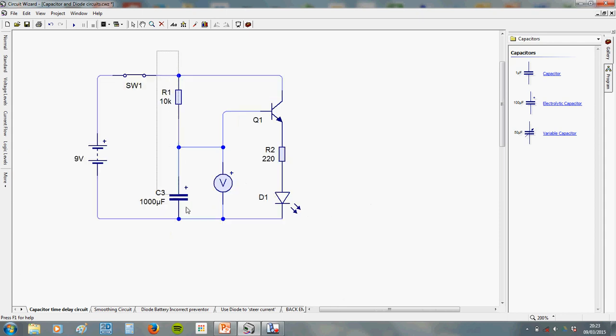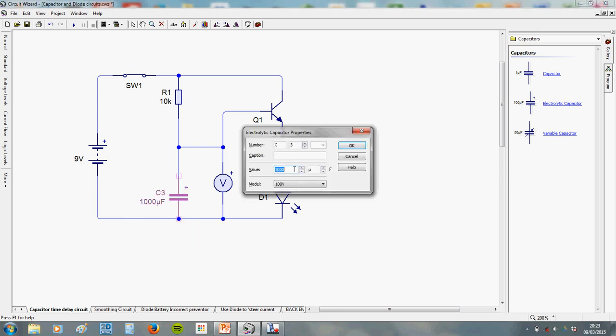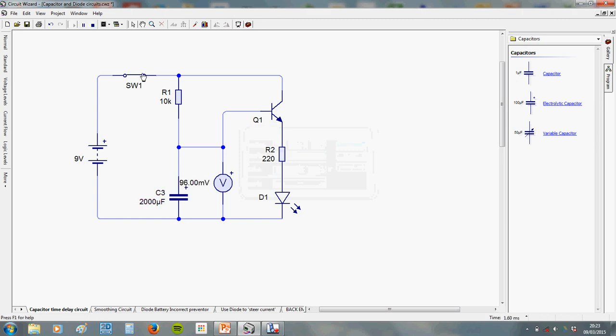Now, there's two things you can do to increase the length of that time delay that it takes that LED to come on. The first one is you can make a bigger bucket. You can put a bigger capacitor in. So, if you were to make that 2,000 UF, it should take twice as long to fill up. I'll just do that again. Okay. Getting on about six seconds. Alright, as you'd expect.